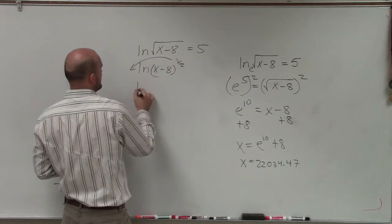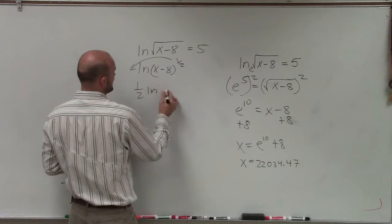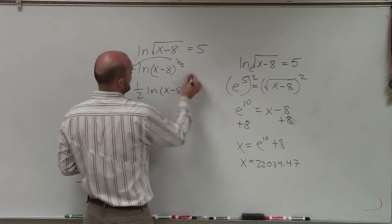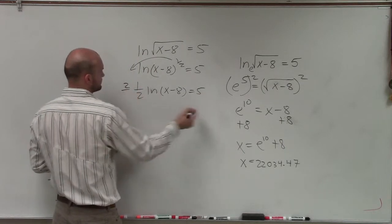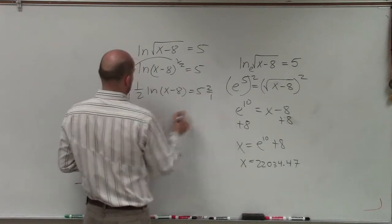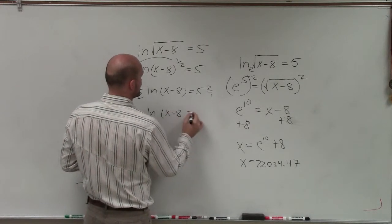Then you can bring that exponent to the front. So it'd be 1 half times the ln of x minus 8 equals 5. Multiply by 2. So then you'd have ln of x minus 8 equals 10.